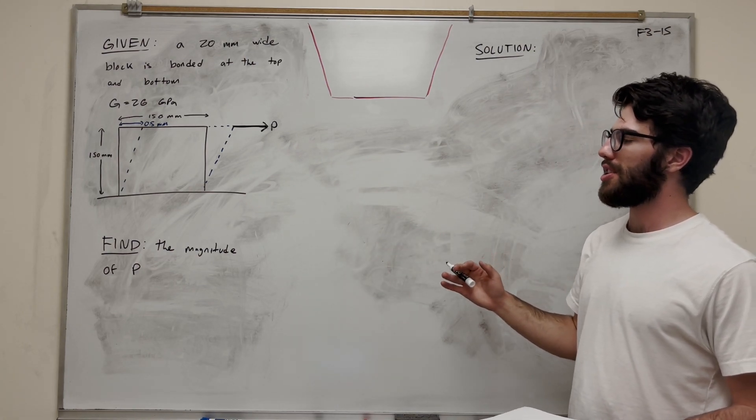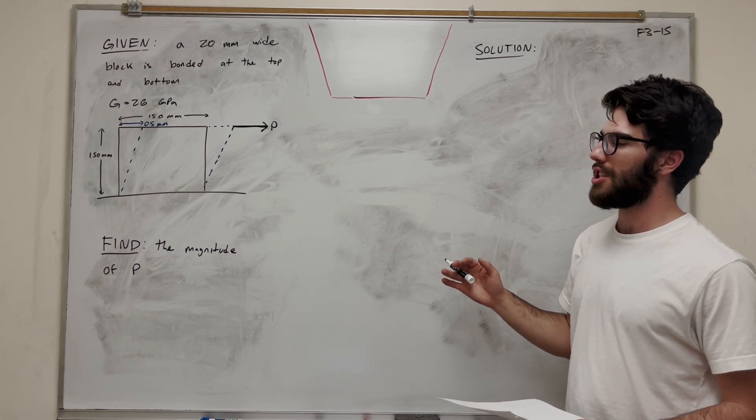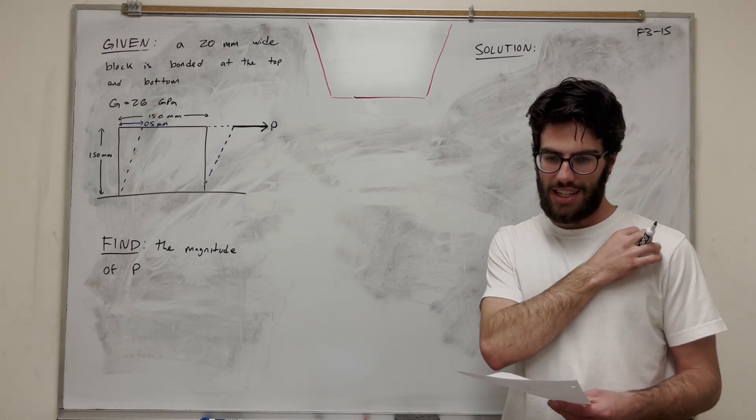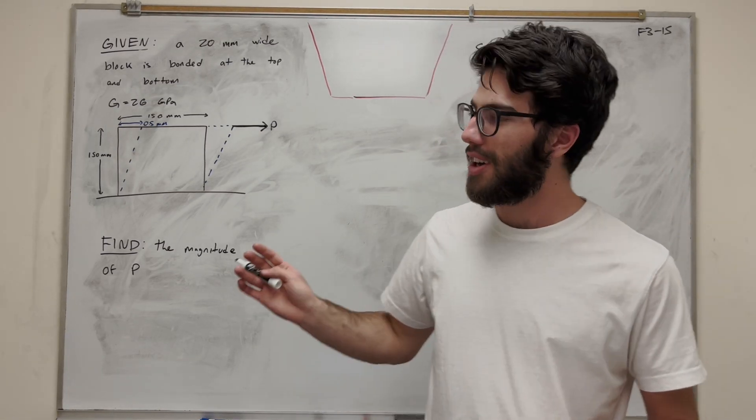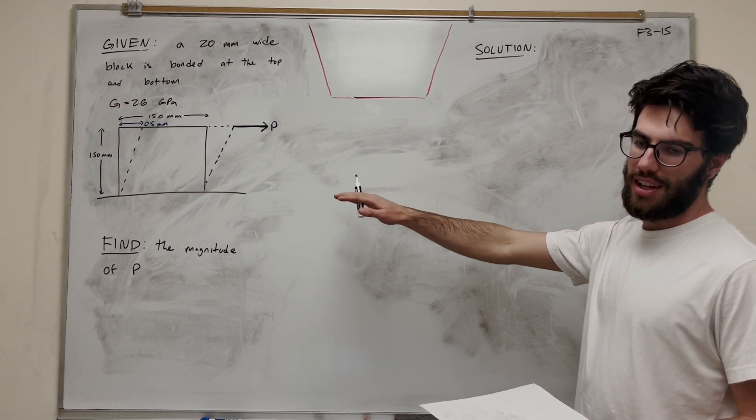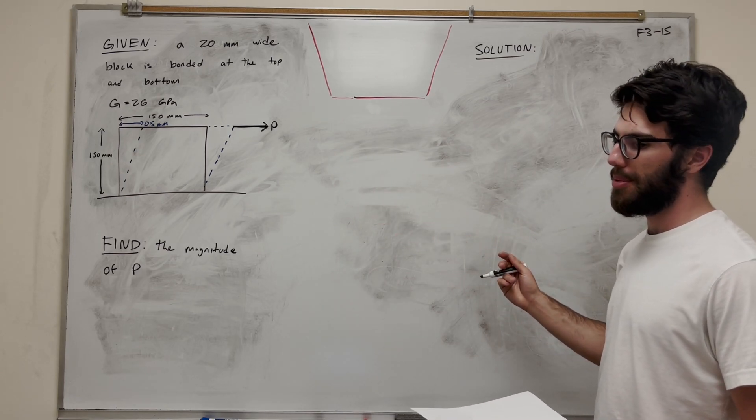We're given the shear modulus of elasticity, 26 GPa. Shear modulus of elasticity - kind of a lot of words to remember. We're given that, and our goal is to find how much P pulls.